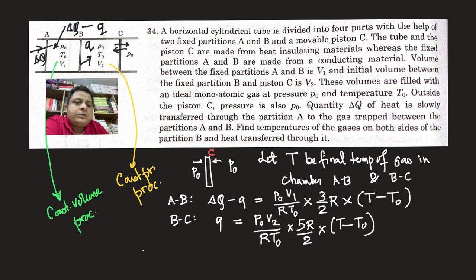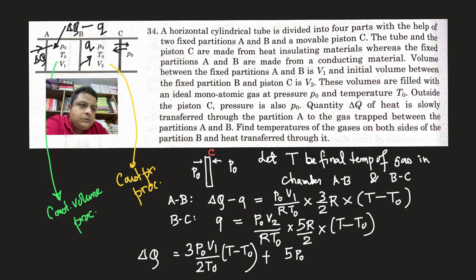Now we can add up the two equations to get delta Q equals P0 V1 by T0 times 3 by 2, R will cancel out, so you get T minus T0, plus 5 P0 V2 by 2 T0 times T minus T0.